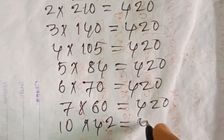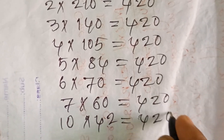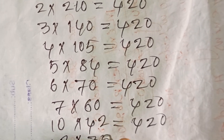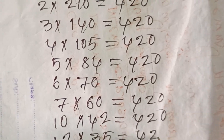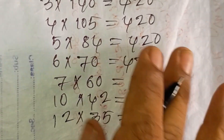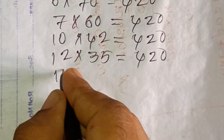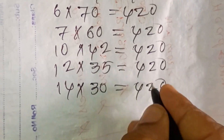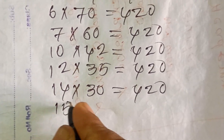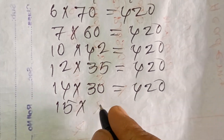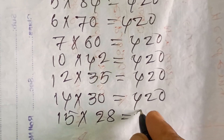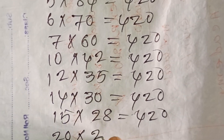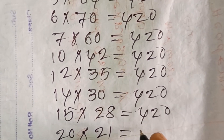10 × 42 = 420, 12 × 35 = 420, 14 × 30 = 420, 15 × 28 = 420, 20 × 21 = 420.